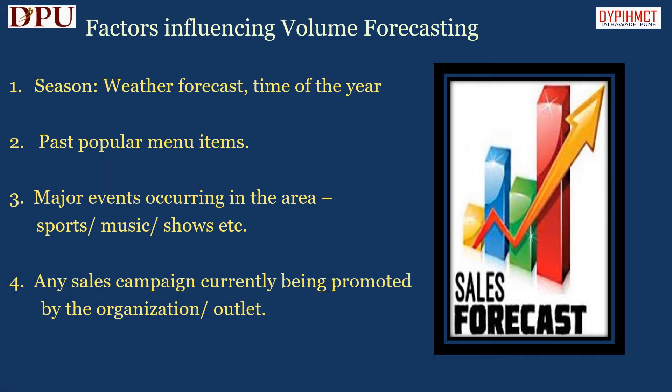In this slide we will see the factors influencing volume forecasting. The first factor is season, weather forecast, and time of the year. This is a non-controllable factor for the organization. A situation like bad weather may result in a lower volume of business than the forecasted volume. Similarly, seasons like the rainy season may result in low volume of business.